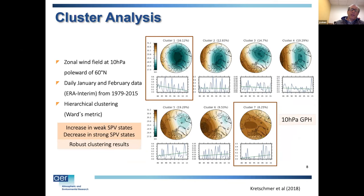We did a cluster analysis on different polar vortex states and found basically seven major clusters. Going from top left to bottom right, they go from stronger to weaker. There's a general decreasing trend in the strongest cluster over the reanalysis or satellite period, and an increasing trend in the weaker polar vortex states — statistically significant.